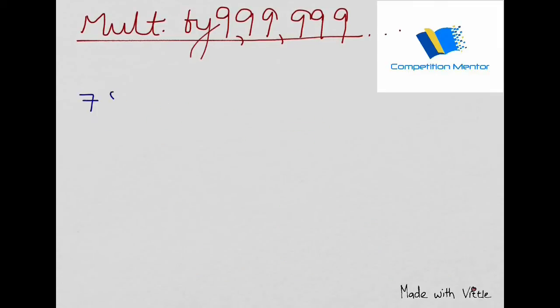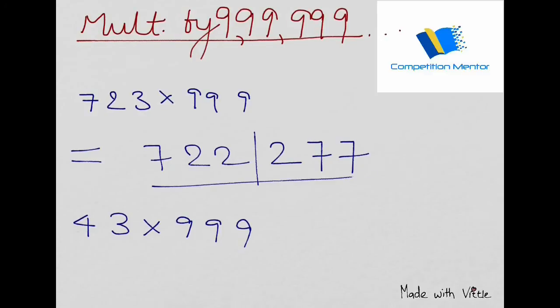Try this yourself: 723 into 999 or 43 into 999. Take some of your time, pause this video. You must have done this very quickly. 722, and then 9 minus 7 is 2, 7, 7. Pretty simple, this is our answer. For the other one, you put 0 before 42, so it becomes 042, then you will put 9, 9, then 9 minus 4 is 5, 9 minus 2 is 7.